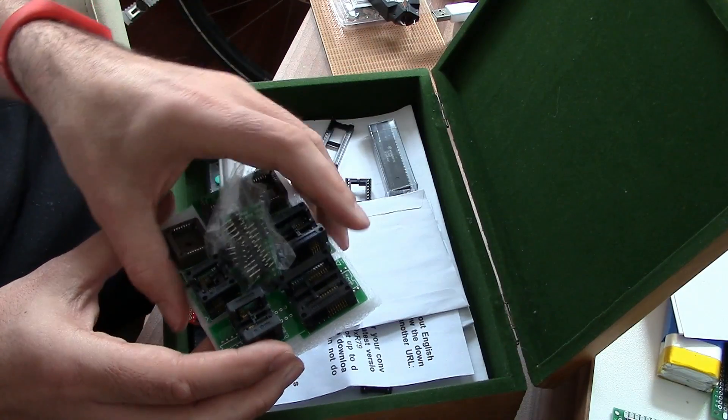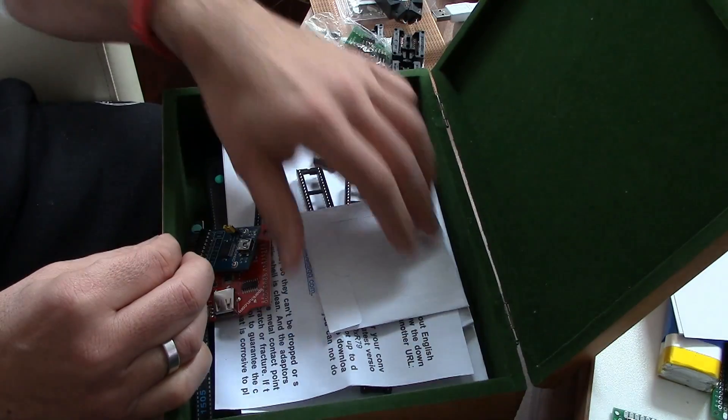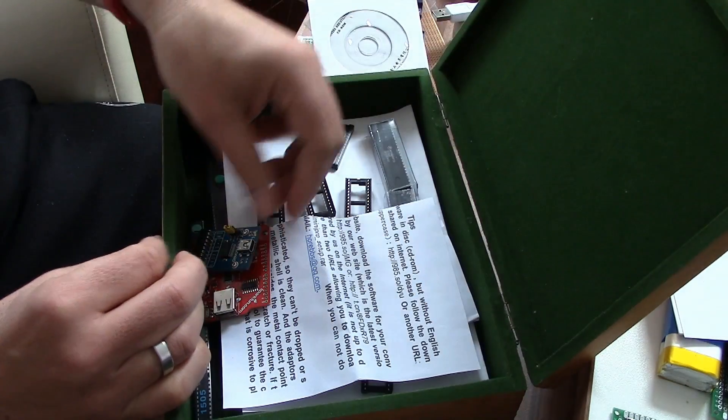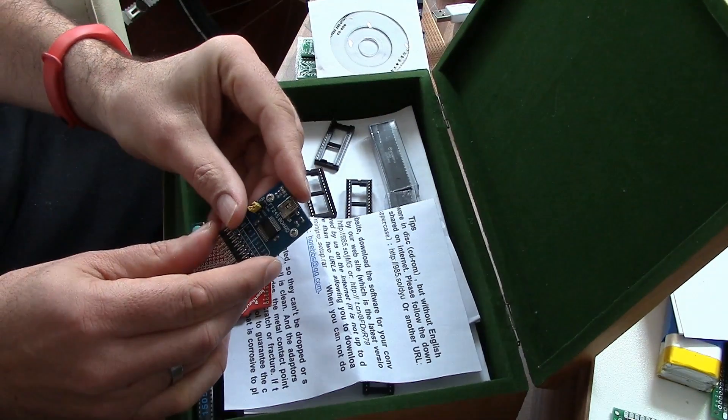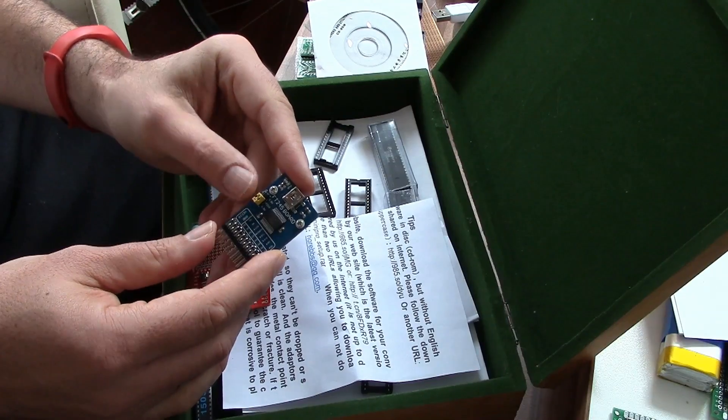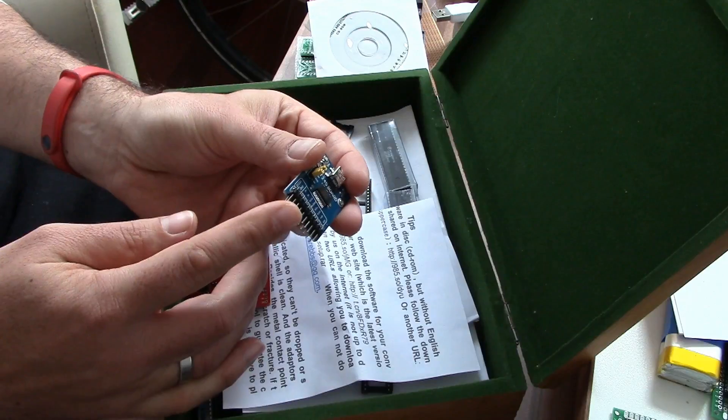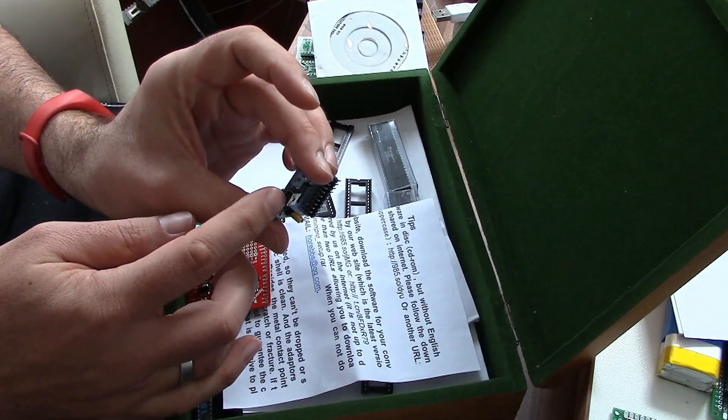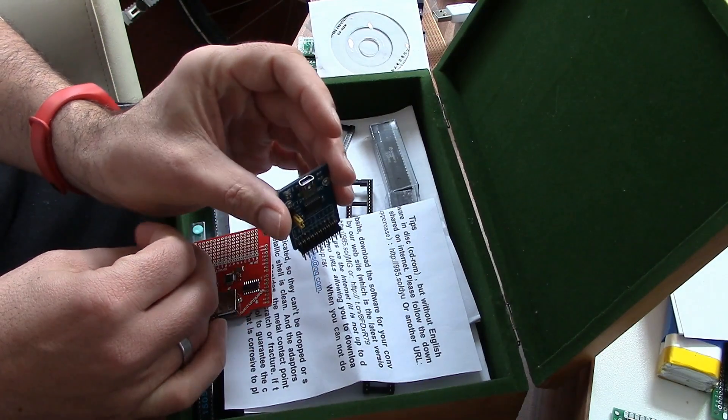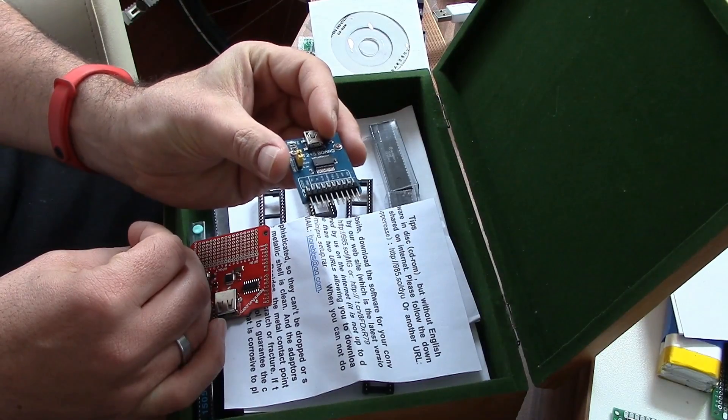Here is the FT245 which is converting the 8-bit signal to serial USB signal so that I can connect via serial with the homebrew computer.